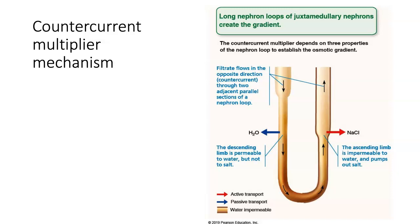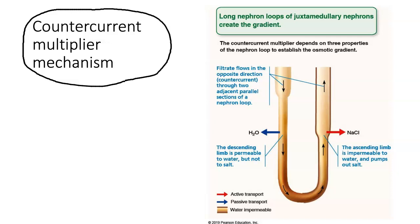If we look at reabsorption in the loop of Henle, this particular mechanism — the reabsorption that occurs there — it's known as the countercurrent multiplier mechanism. This term countercurrent is just referring to the fact that the filtrate flows down the descending limb of the loop of Henle, and at the same time we have filtrate flowing up the ascending limb.